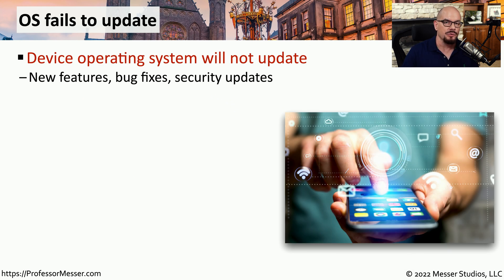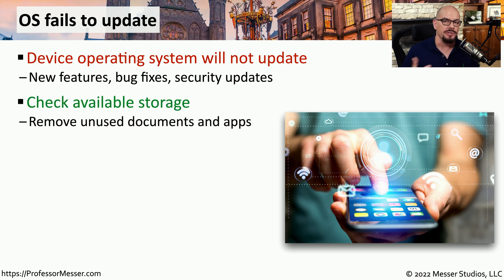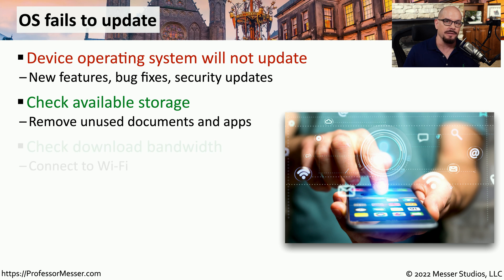There will be times when our mobile device needs to be updated with a new version of the mobile operating system. But if you try to update and find the update process is not working, there are a few steps you can go through to correct this issue. One of the biggest issues in updating an operating system is having enough free space on your device to download the new operating system. So you may want to check your available storage, and if there's not enough space, you might want to remove any apps or documents you no longer need.